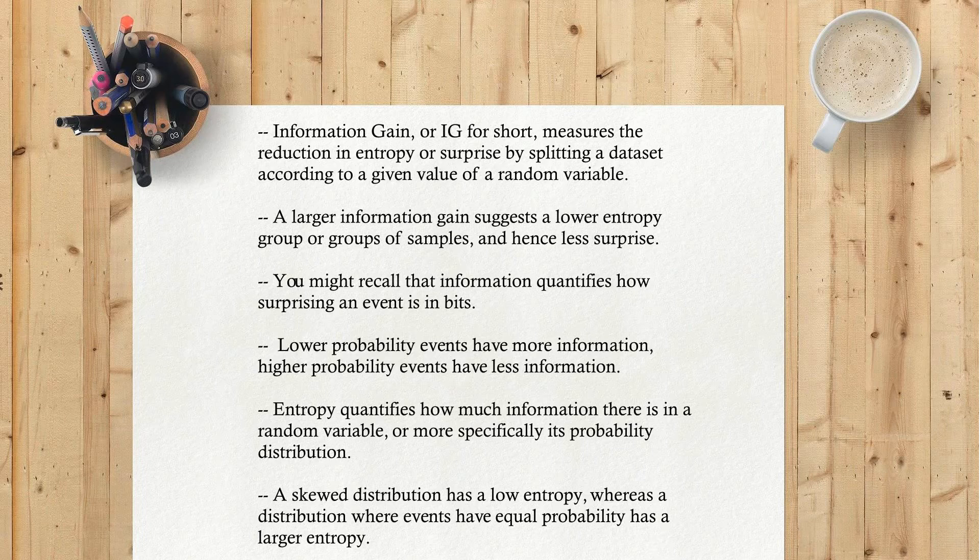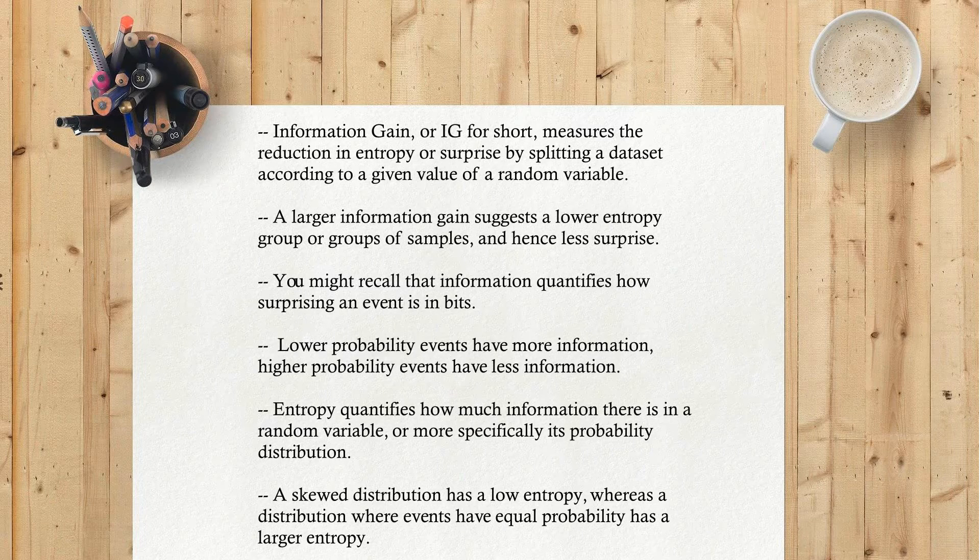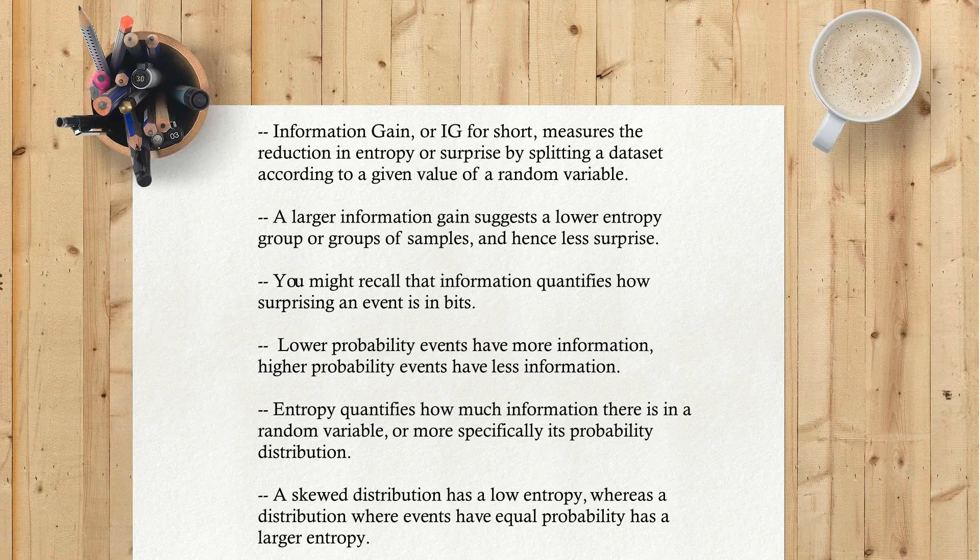Information gain, or IG for short, measures the reduction in entropy or surprise by splitting a dataset according to a given value of a random variable. A larger information gain suggests a lower entropy group of samples and hence less surprise. You might recall that information quantifies how surprising an event is in bits. Lower probability events have more information, higher probability events have less information. Entropy quantifies how much information there is in a random variable, or more specifically its probability distribution. A skewed distribution has a low entropy, whereas a distribution where events have equal probability has a larger entropy.